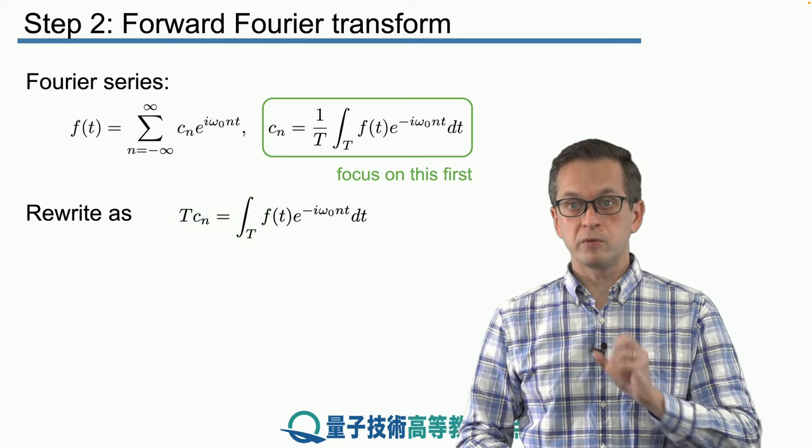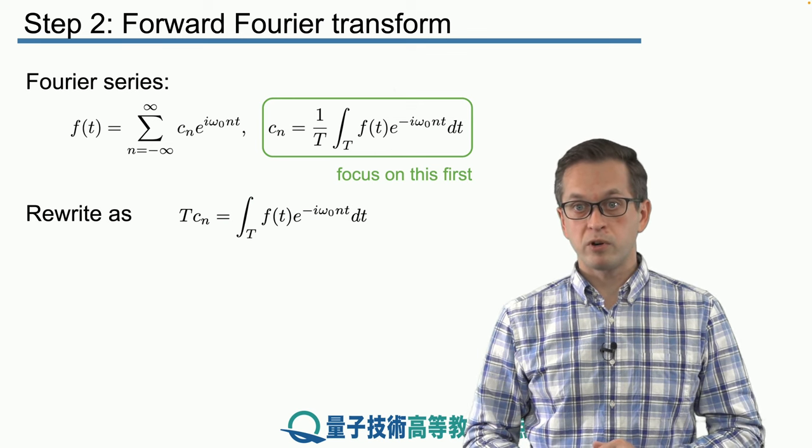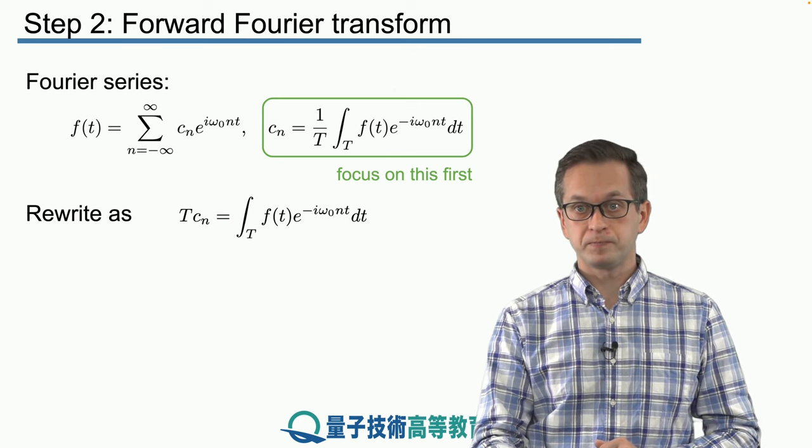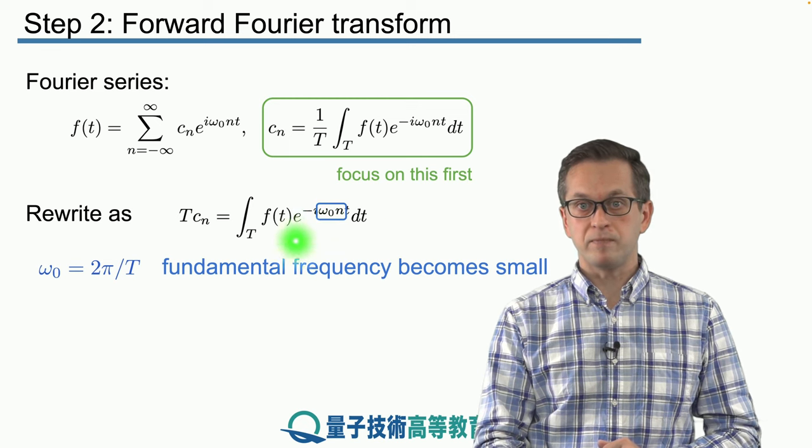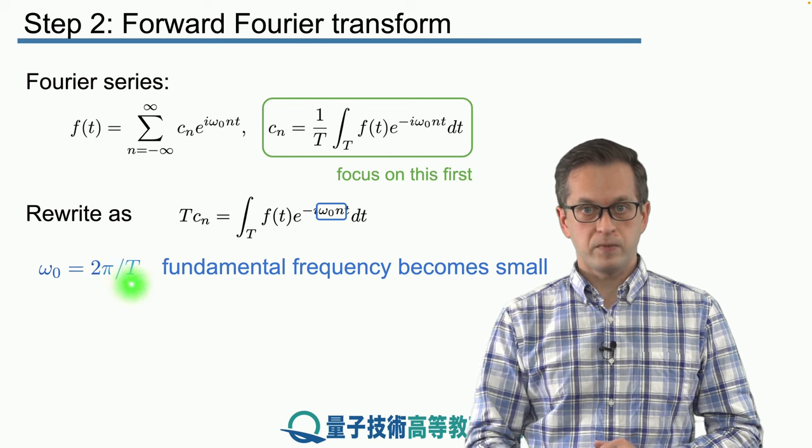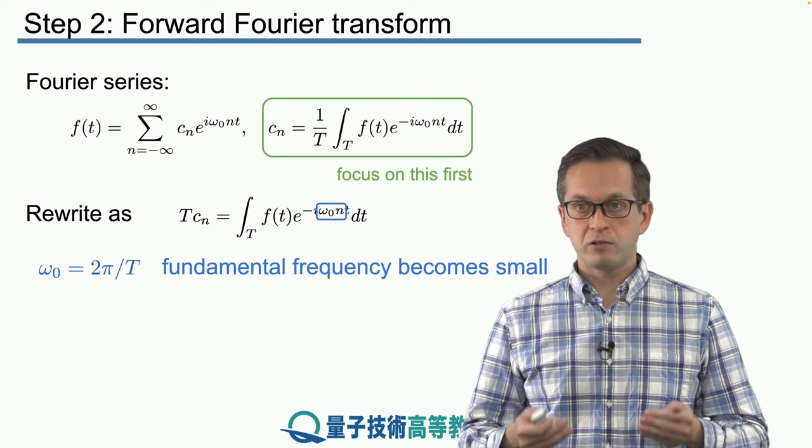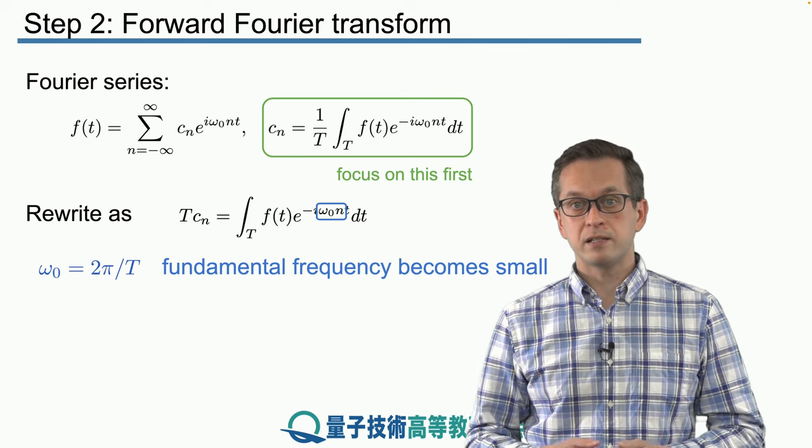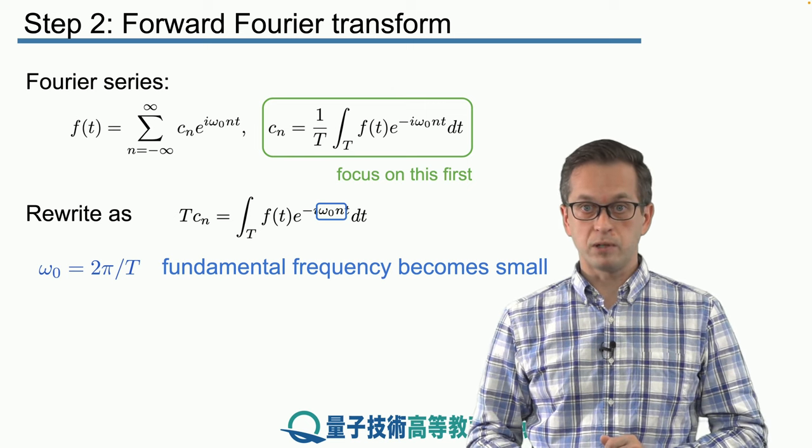And now we're going to look at the individual terms and what happens to them as T goes to infinity. So first we're going to look at the exponential. This is omega naught times n. So we know that the fundamental frequency is given by this. Omega naught is 2π over capital T. So as T goes to infinity, you can see that this fundamental frequency, it will keep getting smaller and smaller and smaller.